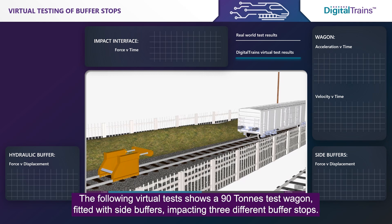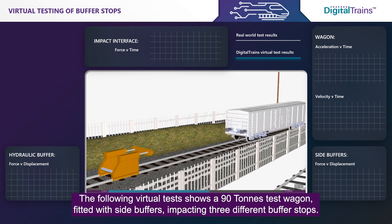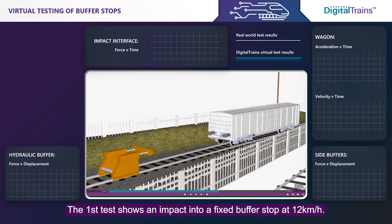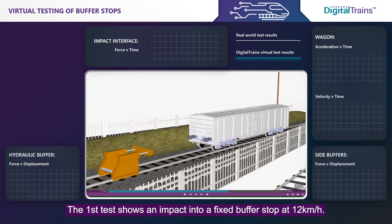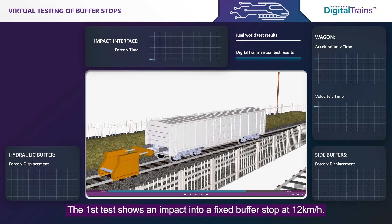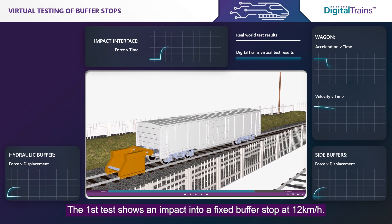The following virtual test shows a 90-tonne test wagon fitted with side buffers impacting three different buffer stops. The first test shows an impact into a fixed buffer stop at 12 kilometers per hour.